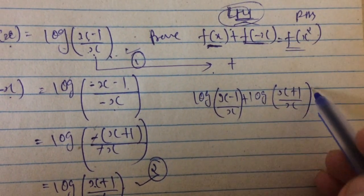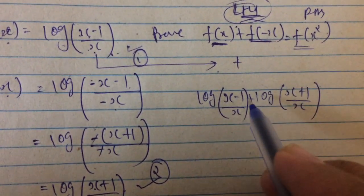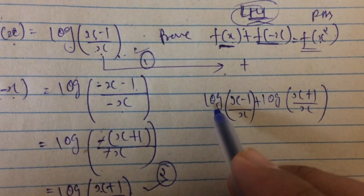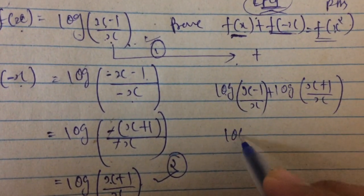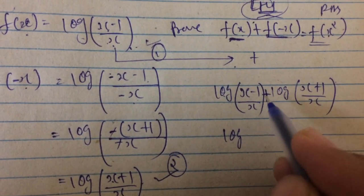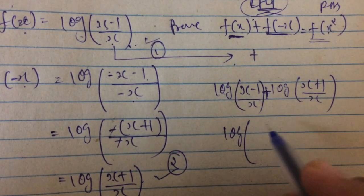Don't put here x² yet because this is what we want to prove, so we need to simplify further. Log and log with plus in between, so that becomes multiply.